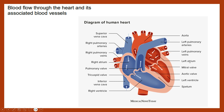So to summarise — four chambers: left and right atrium, left and right ventricle. Four vessels: vena cava, pulmonary artery, pulmonary veins, and aorta.